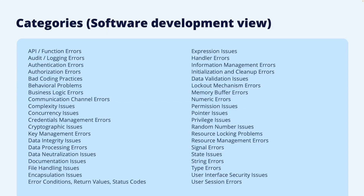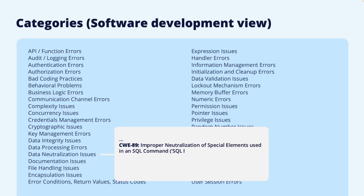To take one more example, the category data neutralization issues includes many weaknesses that are often found in applications. The well-known SQL injection is in this category. This is a way of injecting SQL database control logic into data such that the web application can be made to issue crafted SQL commands to the database. This is known to leak database information, for example, password data. Data neutralization is not just for input but also for output data. Another weakness in this category is named improper output neutralization for logs, meaning that if an application does not sanitize data before it is written to a log, the log can get corrupted with fake entries.